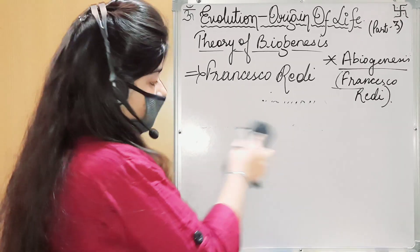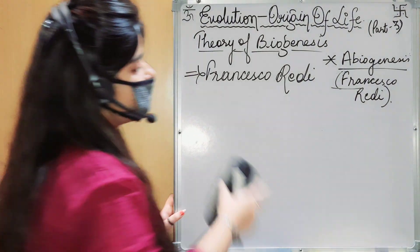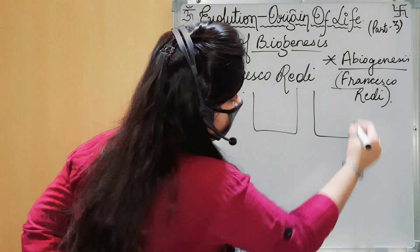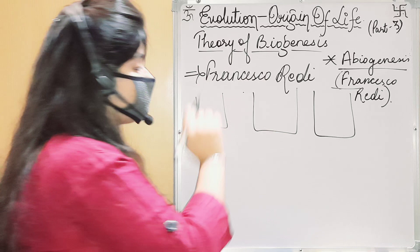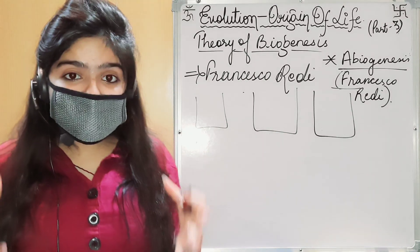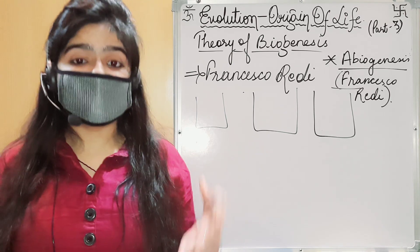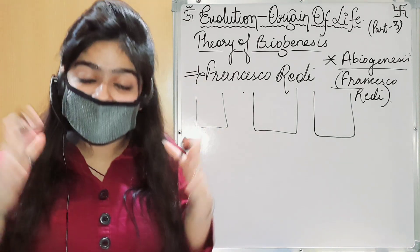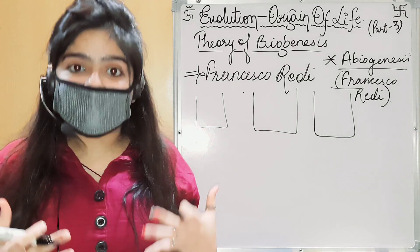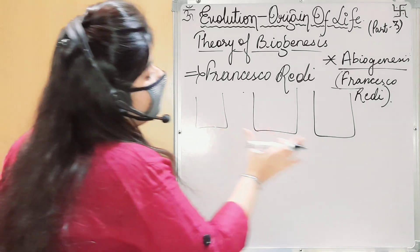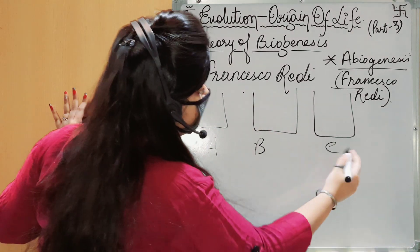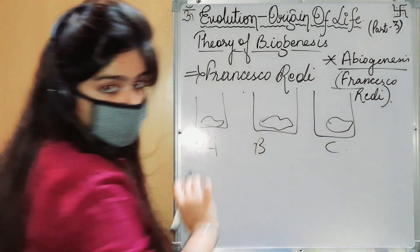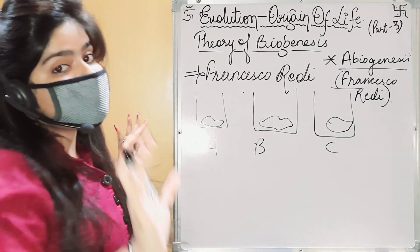First, Francisco Redi discarded the theory of abiogenesis and then experimented to support the theory of biogenesis. The basic principle of this theory is that life is not generated from a non-living thing — unlike abiogenesis. For his experiment, he took three jars — A, B, and C — and placed a piece of meat in all three jars.